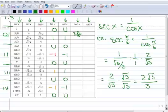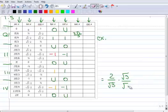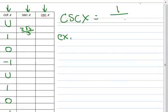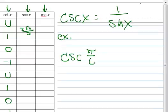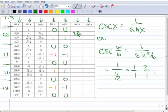Now let's do the cosecant. You're probably noticing a pattern: if the secant is 1 over the cosine, then the cosecant is 1 over the sine. The cosecant of an arc is by definition the reciprocal of the sine. Let's do pi over 6: the cosecant of pi over 6 is 1 over the sine of pi over 6, which is 1 over 1/2. Multiply 1/1 by the reciprocal 2/1, and you get 2. So the cosecant of pi over 6 is 2.